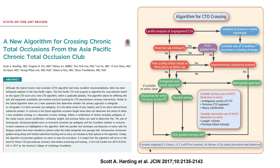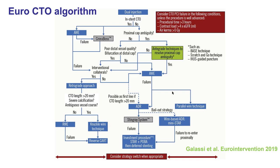Five years later, the Asia-Pacific CTO crossing algorithm was published. This shared many similar components with the hybrid algorithm but included additional techniques such as IVUS-guided entry for proximal cap ambiguity, and also emphasized the importance of parallel wiring if antegrade wiring was unsuccessful. The third algorithm, in 2019, was the Euro-CTO algorithm, which is a little more complicated but again emphasizes dual injection and careful angiographic review. Key characteristics remain the same: proximal cap ambiguity, presence of interventional collaterals, and if antegrade wire escalation fails, options include ADR or the parallel wire technique. For every algorithm, there remains a principle of changing strategy if things don't work out.